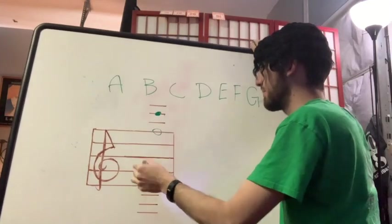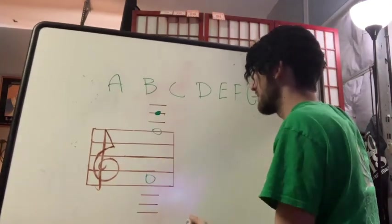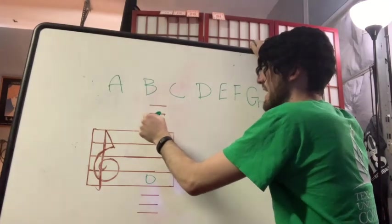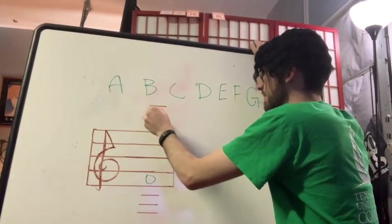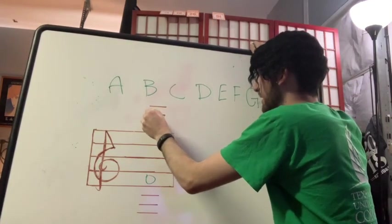So we can skip like we do on the lines and spaces. So I could say F, A, and know that it is C. And that saves you a little bit of time.